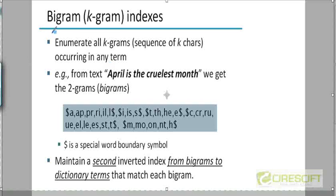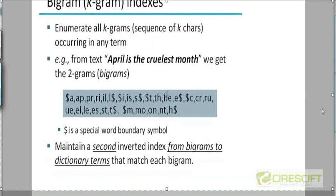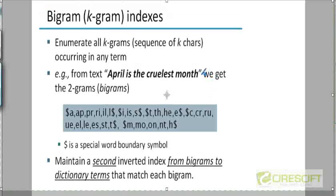Now we are going to look at a third solution called a Bigram Index. In terms of its importance, this is more important than a Permterm Index because a Bigram Index — or more generally a K-gram Index — is also going to be used in the context of spelling correction. So this is solution number three for answering wildcard queries.